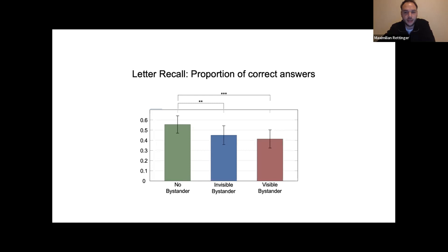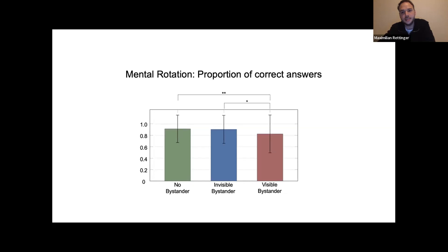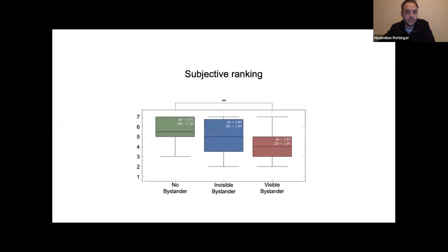The proportion of correctly-remembered letter pairs with 95% confidence intervals showed significant differences between the no-bystander and invisible bystander conditions, as well as between no-bystander and visible bystander conditions. The no-bystander condition had the best results in the letter recall task. Results of the mental rotation task also indicated significant differences between no-bystander and invisible bystander, and between invisible bystander and visible bystander groups.